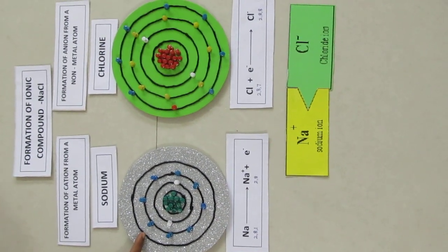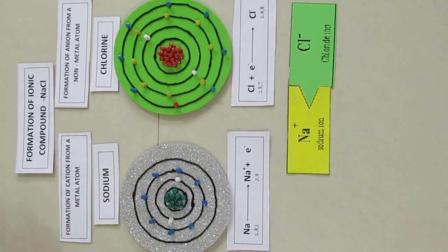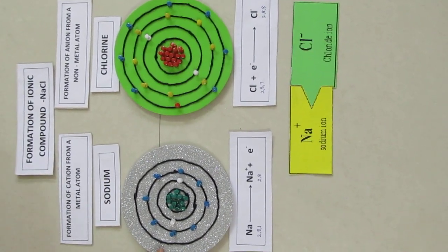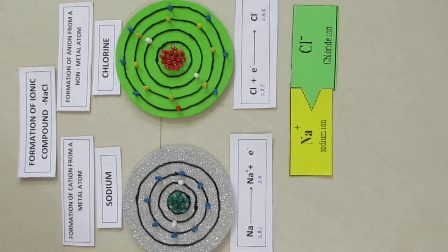The compounds formed in this manner by the transfer of electron from metal atom to a non-metal atom are known as ionic compounds or electrovalent compounds. Thank you.